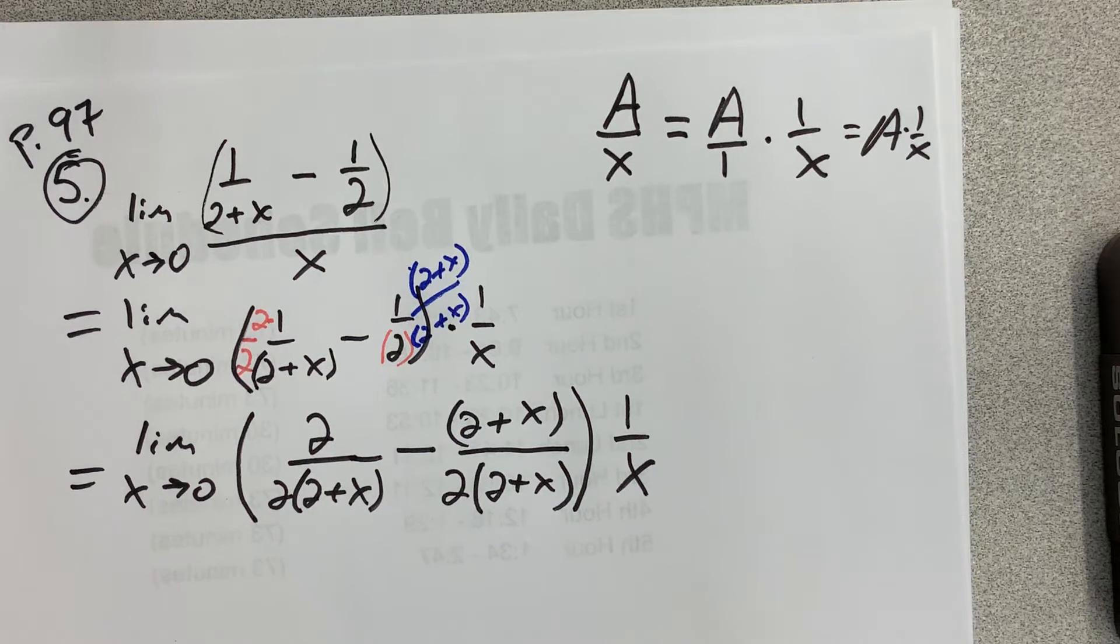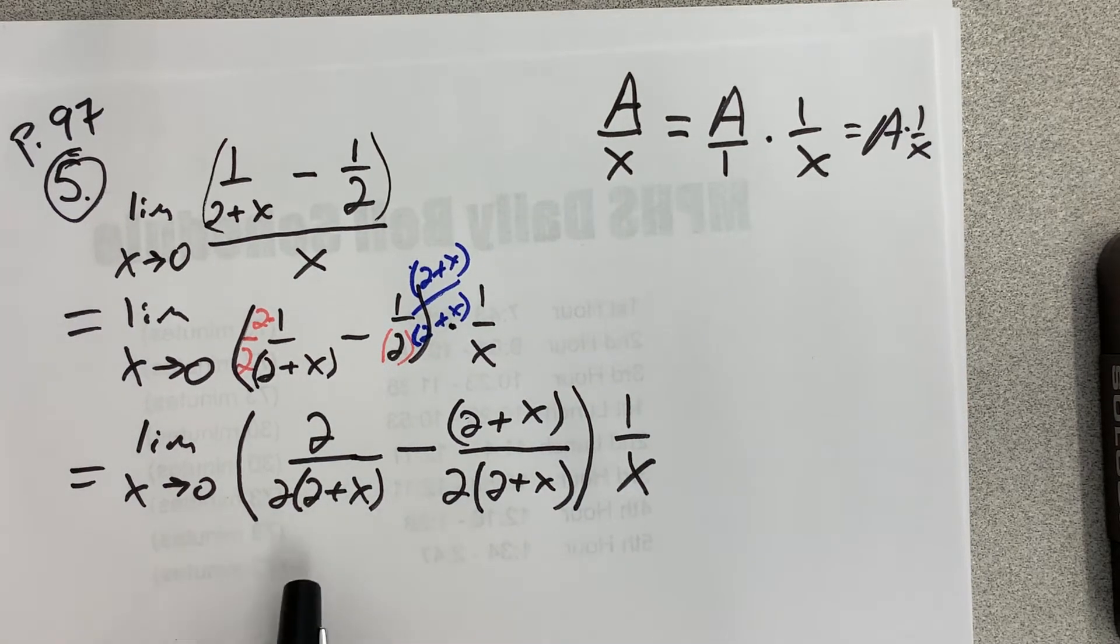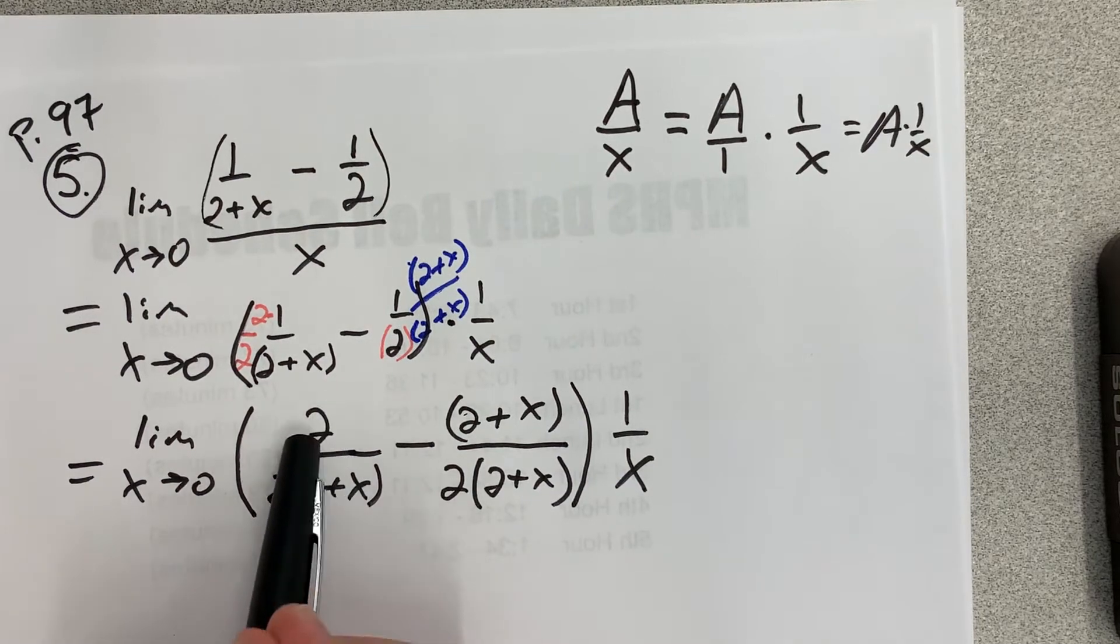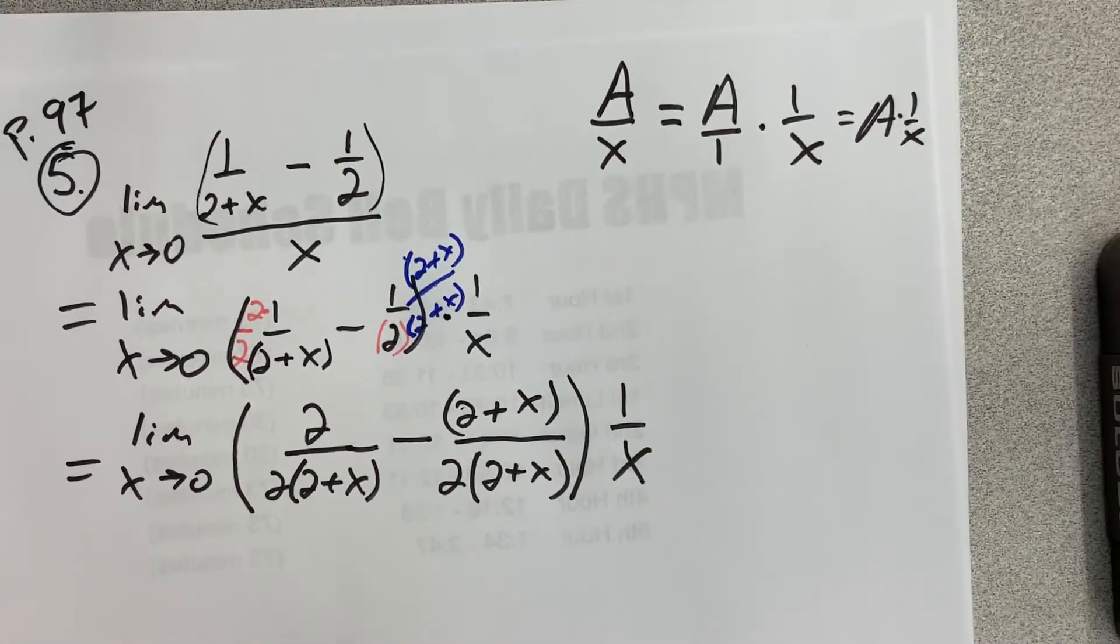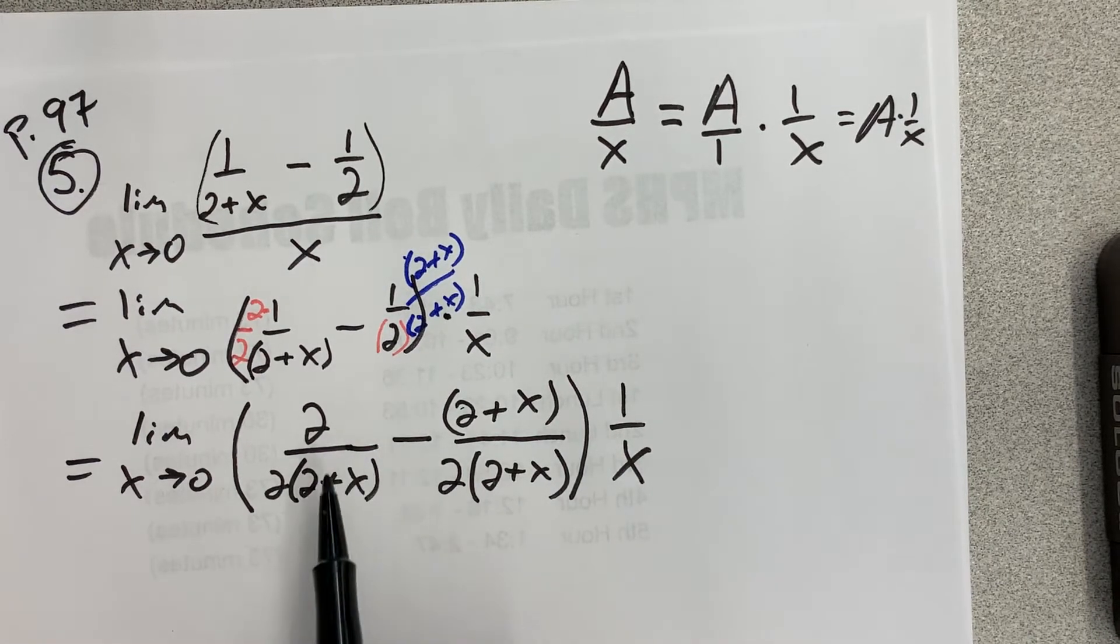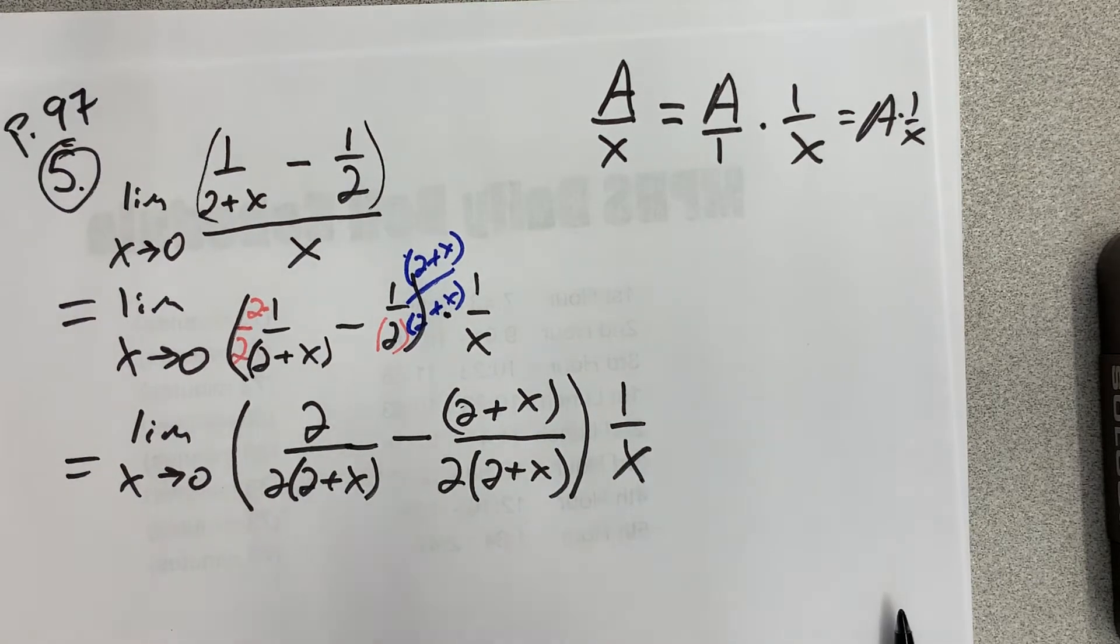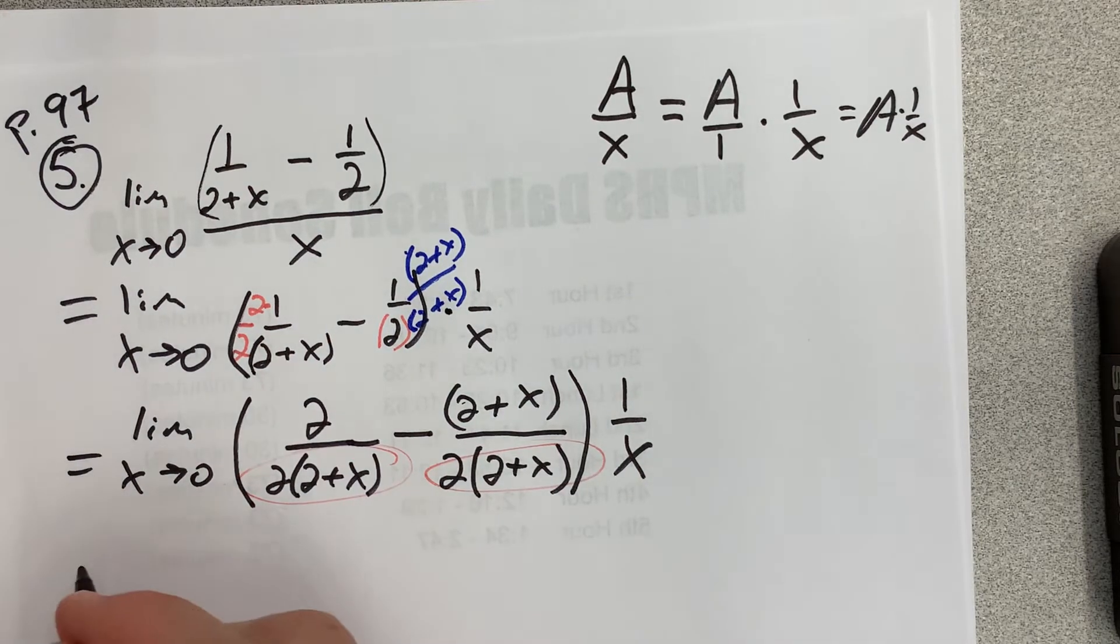All right, so don't make this mistake. Sometimes I will see students do this, and they'll be like, oh look at this, 2 over 2, that's 1, and they'll cancel it out and write the next line. It's like, no, we just put that there because we needed it. Don't take it away. So now that we have a common denominator, as you can see here and here, now I can combine those fractions together.